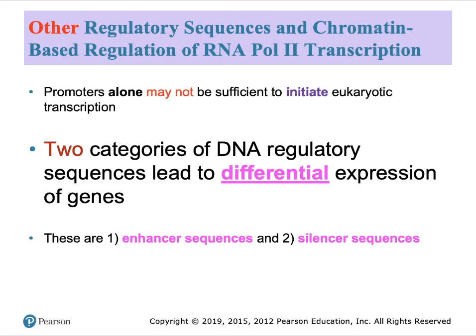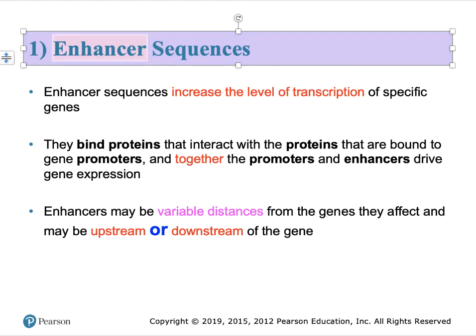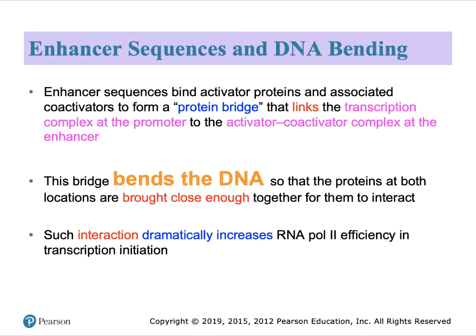Unlike the situation in bacteria, binding to the upstream promoter is not enough in itself to induce transcription at the necessary levels. Other regions, either further away upstream or downstream, also impact the level of transcription. These regions come in two categories: enhancer sequences, which increase the level of transcription, and silencer sequences, which act in the opposite direction by reducing or eliminating transcription. Their locations can be variable between different genes. How is the binding of proteins to DNA elements tens or even hundreds of thousands or millions of base pairs away from the promoter possible? DNA is more flexible than we give it credit.